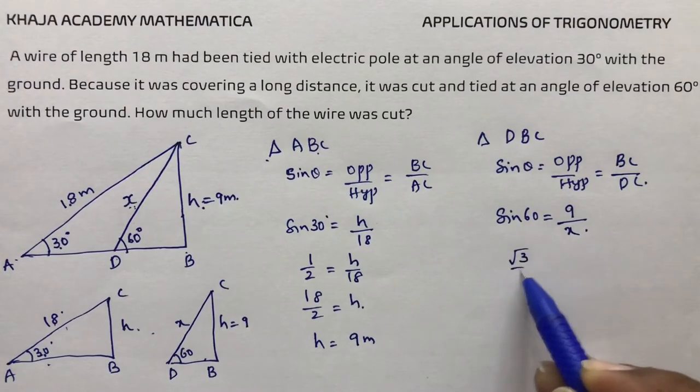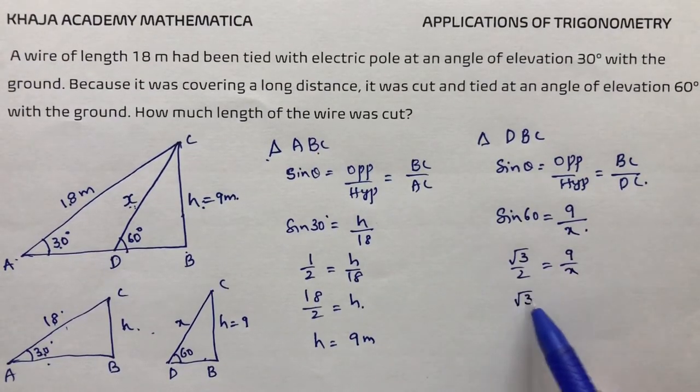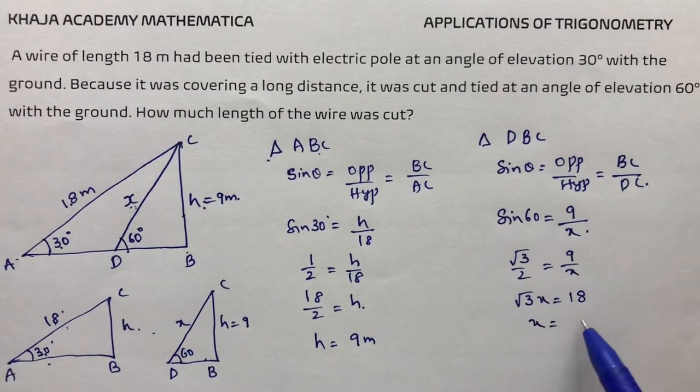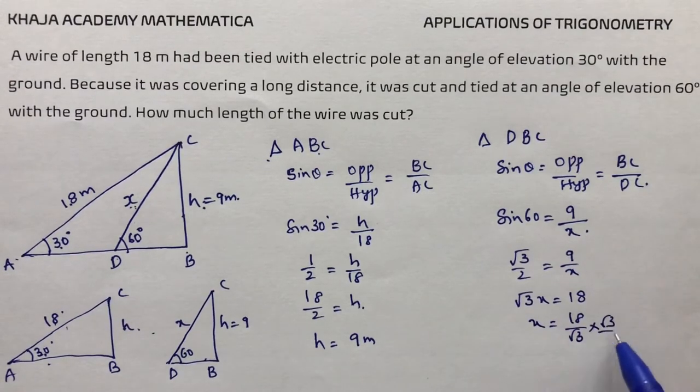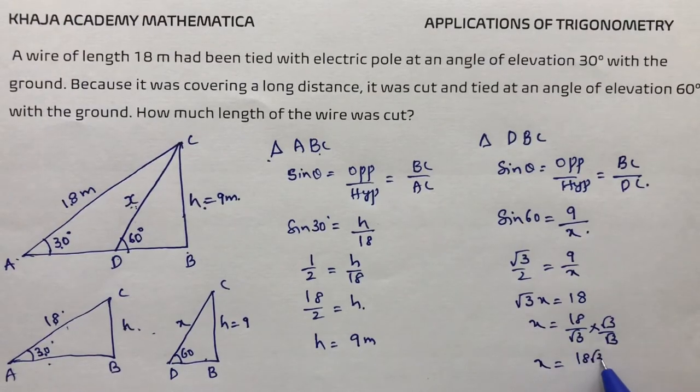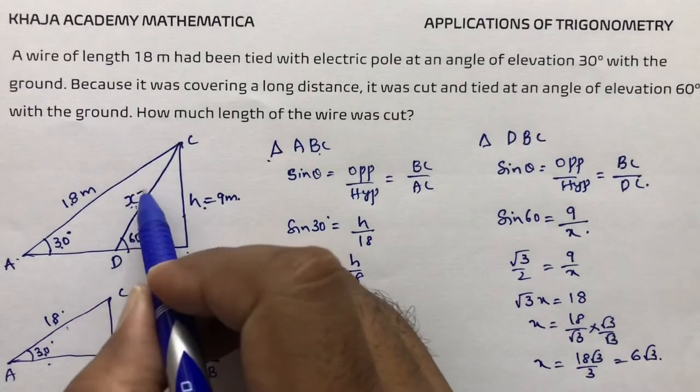Sin 60 is root 3 by 2 equals 9 by x. Cross multiplying, root 3 times x equals 18. So x equals 18 by root 3, which simplifies to 6 root 3.